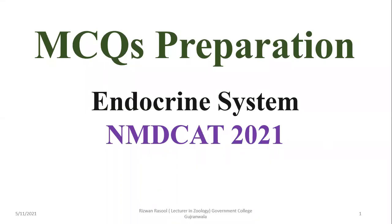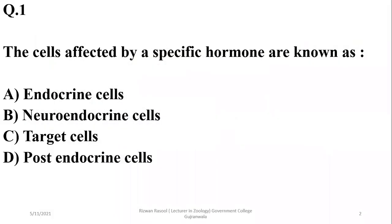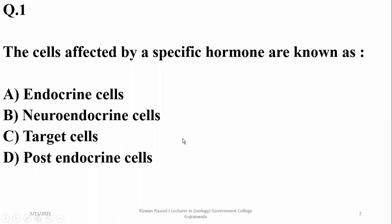This video is about the endocrine system and its important MCQs. Question one: the cells affected by a specific hormone are known as endocrine cells? No. Neurocrine cells? No. Target cells? Yes. The cells which are affected by hormones are known as target cells of those hormones specifically.